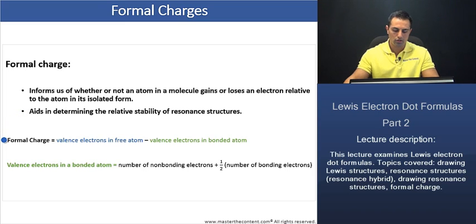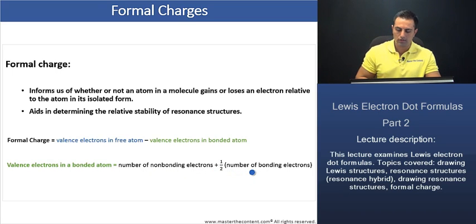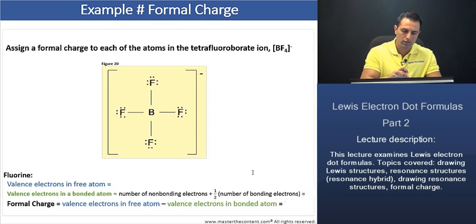Next, we'll take a look at calculating the formal charge of an atom in a molecule. To do so, it's fairly simple. All we're going to need to do is take the number of valence electrons in a free atom minus the number of valence electrons in the bonded atom. And the valence electrons in a bonded atom can be found through the following formula, which is the number of non-bonding electrons plus one half of the number of bonding electrons. Let's do an example now on the next slide to really solidify our understanding here.